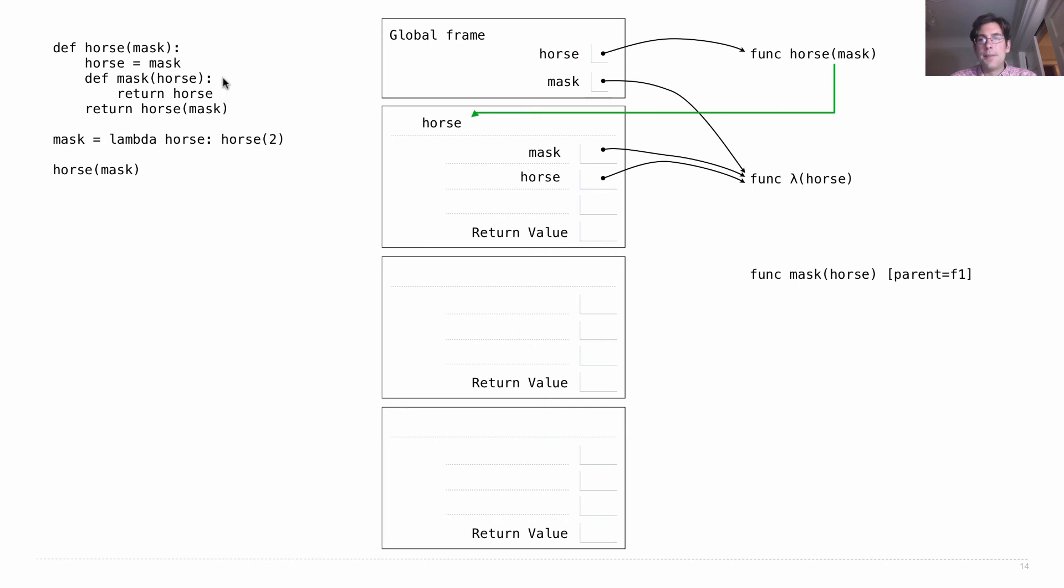Next we define mask. We create that function, since it's a nested def its parent is the frame in which it was defined, F1. We label this, mark the parent of that, and bind that to the name mask, the third step of a def statement. Since we have mask, meaning this function which I just defined, it can no longer be bound to this lambda function, because within a frame a name can refer to only one value, so that line is gone. Next we evaluate the return expression horse(mask). What's horse? It's there. What's mask? It's there. So we're going to call this function on that function. We're calling this function, which means we introduce a new frame. It's a lambda frame. The formal parameter of the lambda function is horse, and it will be bound to the argument that we pass in, which is whatever is currently bound to mask.